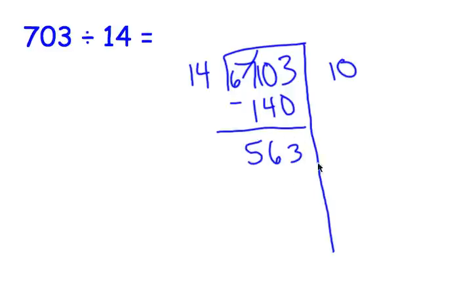We still have quite a bit left. So, why don't we this time do... We'll double it. We'll take out 20 groups. If we double 140, that'd be 280. So, let's take out 280 this time. 3 minus 0 is 3. We have to borrow. 16 minus 8 is 8. 4 minus 2 is 2.